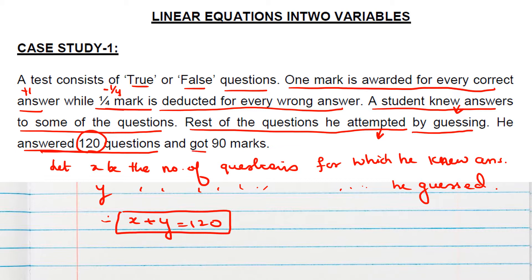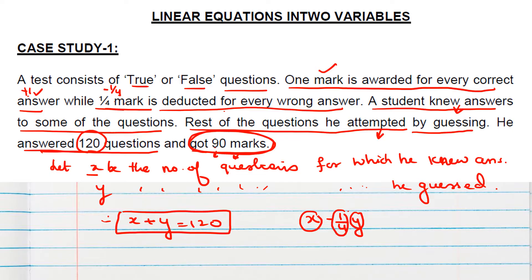The condition related to marks is also given — he got 90 marks. For every correct answer, x into 1 mark. For every wrong answer, 1/4 of y marks are deducted. Assuming all answers he knew are correct and all guessed answers are wrong, we get x minus 1/4 y equals 90. Multiplying through by 4, our second equation is 4x minus y equals 360.